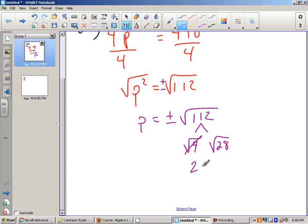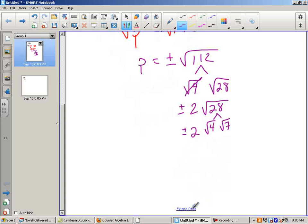So this gets crossed out and becomes a 2. I've got my 28 here. Of course, I'll keep my plus and minus just so I don't forget. But then I know 28 breaks down as the square root of 4 and the square root of 7. And as I extend down, P equals, this is another 2. 2 times 2 is 4, so plus and minus 4 root 7.